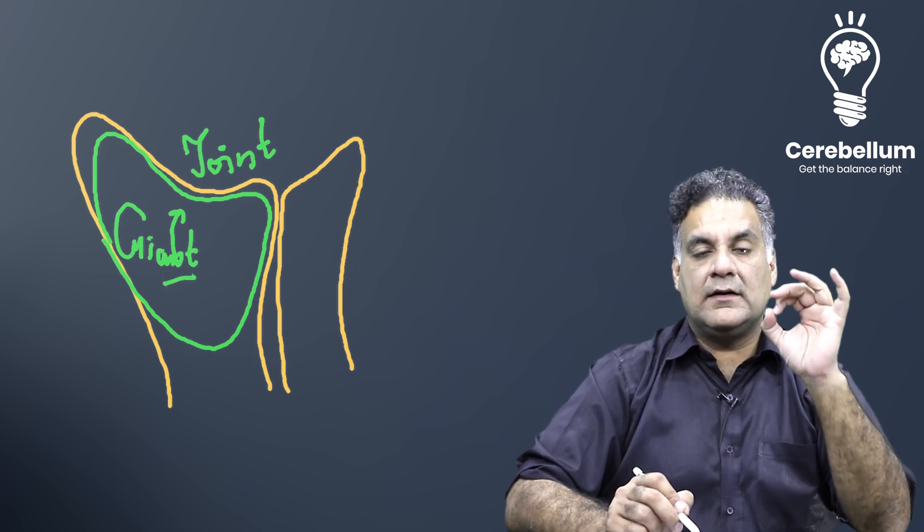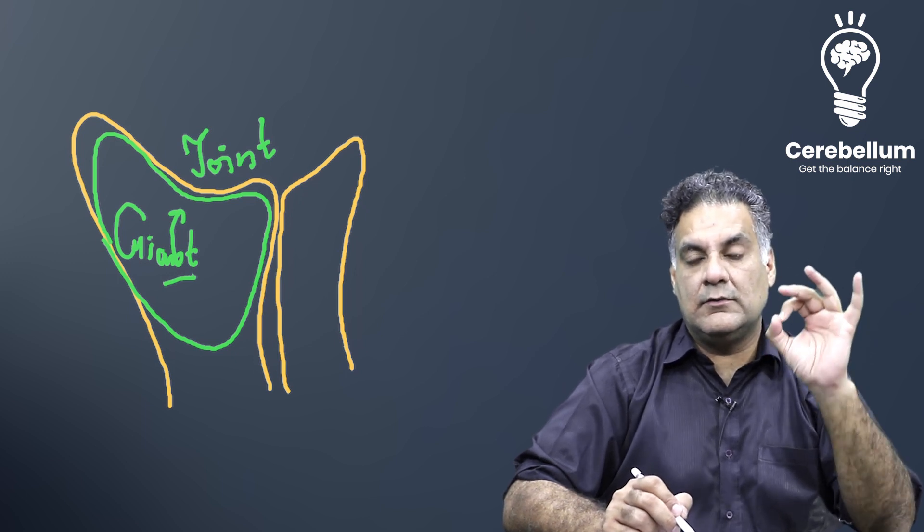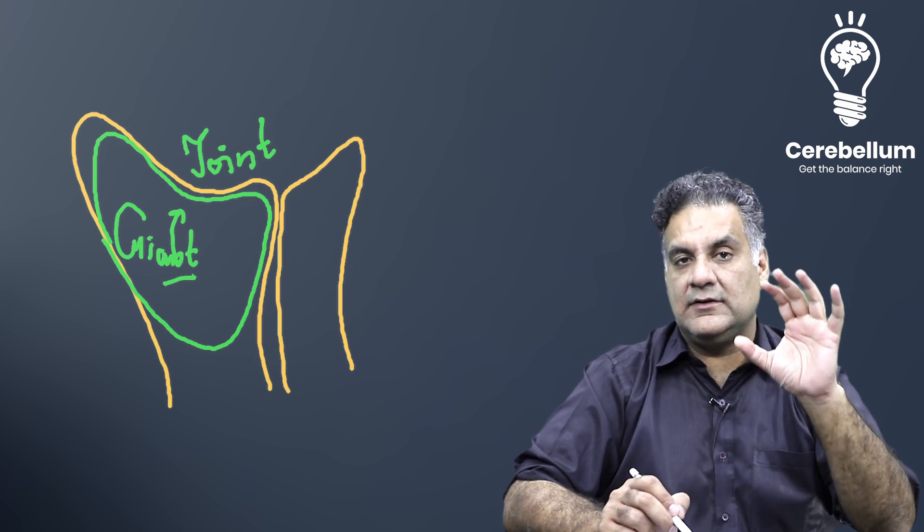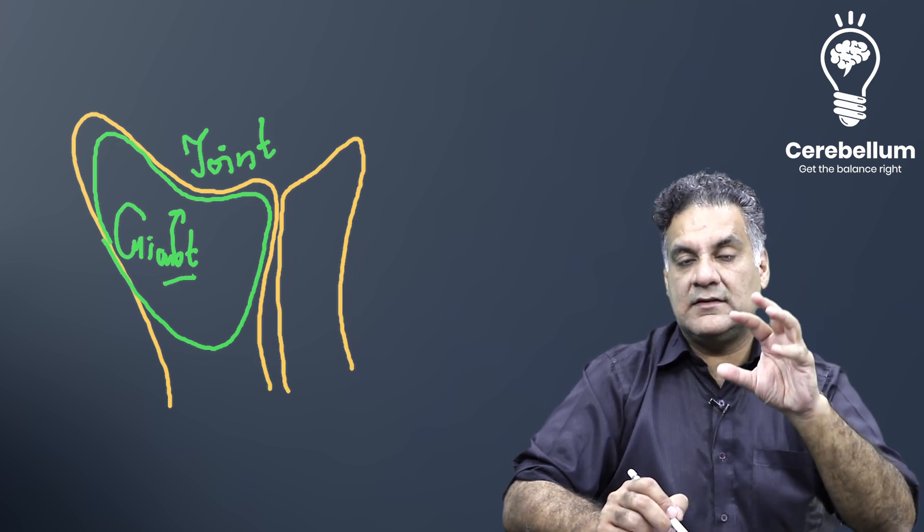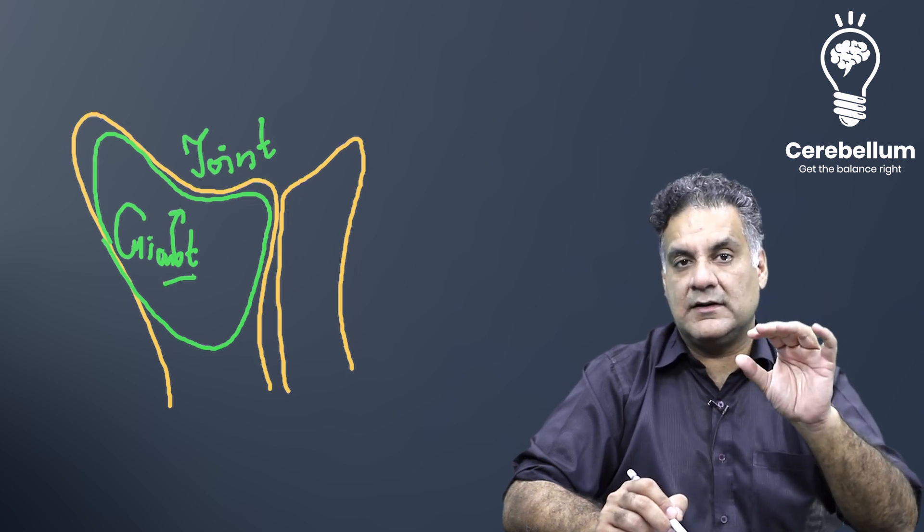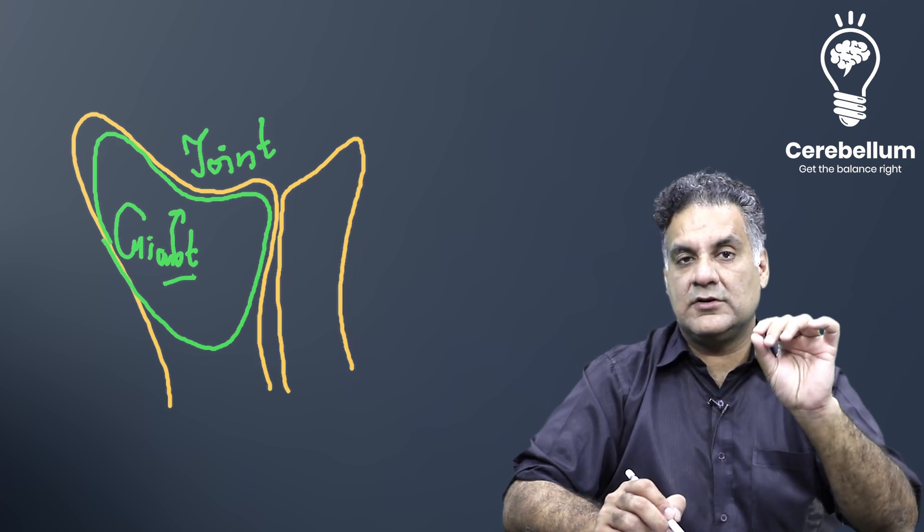Right? There is no other bone tumor in the body that can involve the joint. The only one that can involve the joint is the giant, also called the giant cell tumor. Giant cell tumor in fact can involve the articular cartilage as per Robin's textbook of pathology. And this is what you should remember.